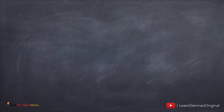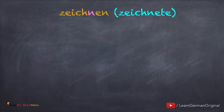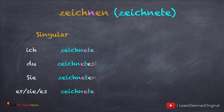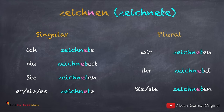Und hier ist ein Verb, wo der Stamm mit n endet. Zeichnen — zeichnete. Ich zeichnete. Du zeichnetest. Sie zeichneten. Er, sie, es zeichnete. Wir zeichneten. Ihr zeichnetet. Sie, sie zeichneten. Since the stem of the verb zeichnen ends with n, we will take an extra e between the verb stem and the t, and finally there is the ending. You should always remember that the conjugation for ich and er, sie, es in Präteritum is the same.